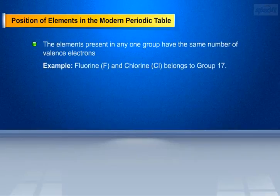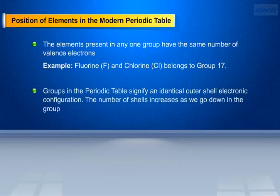The elements present in any one group have the same number of valence electrons. For example, Fluorine and Chlorine belong to group 17. Groups in the periodic table signify an identical outer shell electronic configuration.